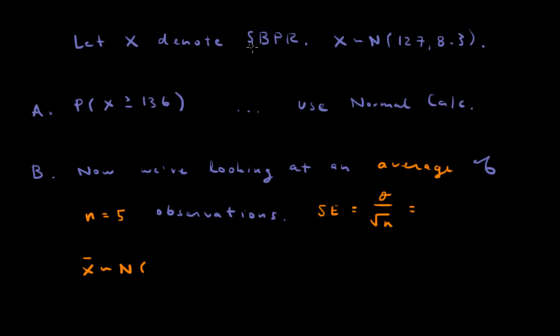So if we let X denote the systolic blood pressure reading, we're told that X follows this normal distribution. Question A, what is the probability that X exceeds 136? To answer this you can just use the normal calculator, it's pretty straightforward. There's your mean, there's your standard deviation. Change the inequality to greater than or equal to, plug in a 136 in the lower left hand box, and this will give you the answer.